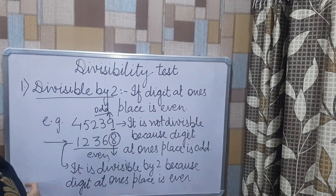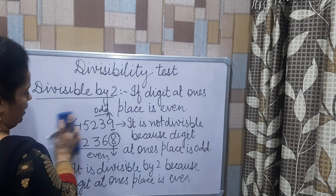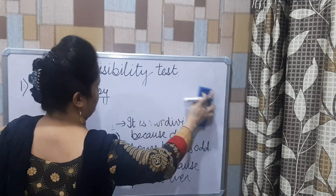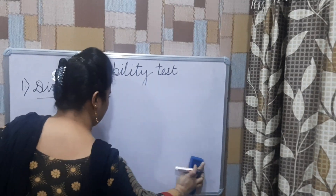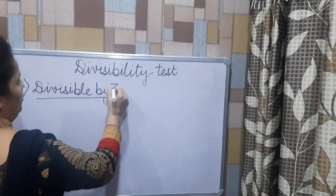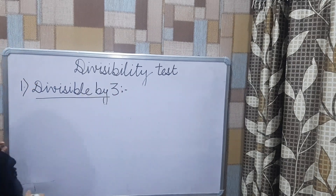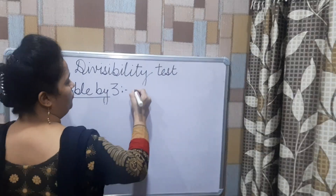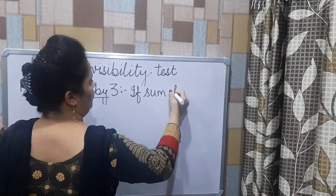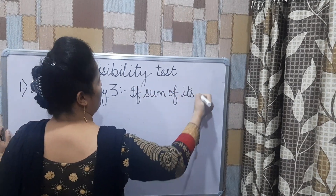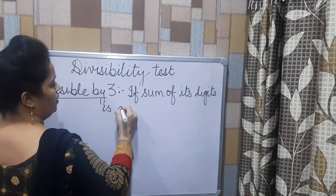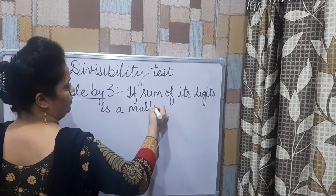Now children, next is divisibility by 3. A number is said to be divisible by 3 if the sum of its digits is a multiple of 3.